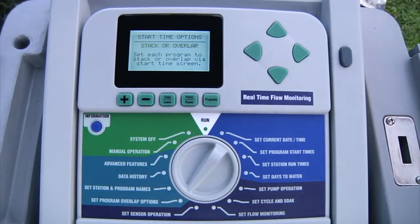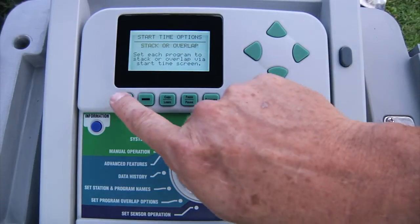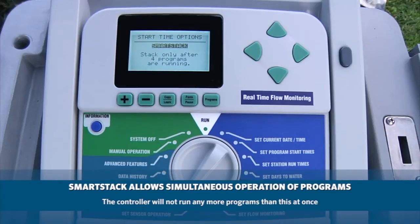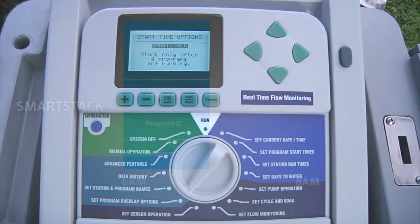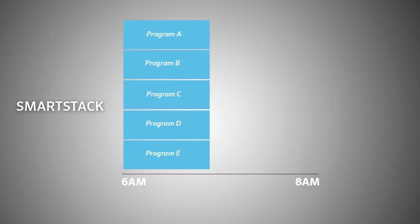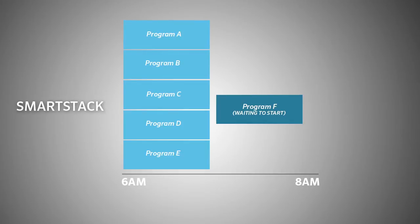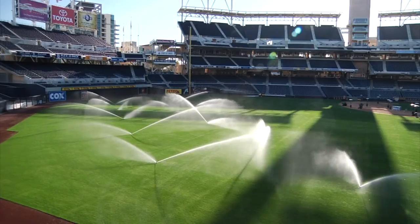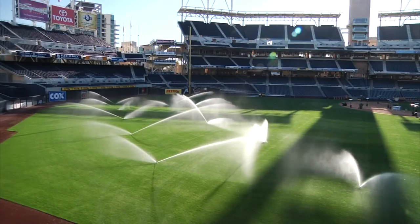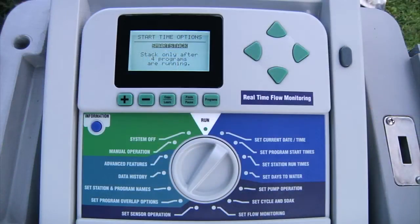The next option is smart stack. When you select smart stack, you can specify a number of programs — between one and five — that are allowed to operate simultaneously. The controller will not run any more programs than this at once. If another program is timed to start after the maximum number has been reached, it will be forced to wait until one of the running programs has finished. This is a great way to minimize the watering window by allowing the controller to run at maximum electrical capacity if you have sufficient water pressure and flow.